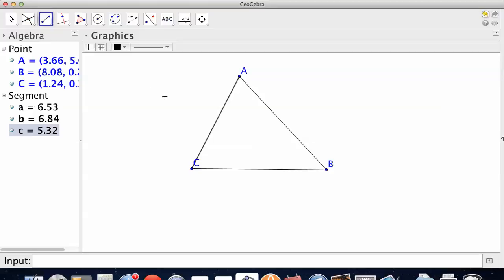Median goes from a midpoint to a vertex. So A, B, and C are the vertices. We need to find the median for one of the sides and then draw a line up to the vertex.